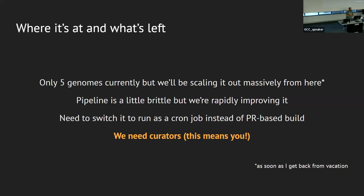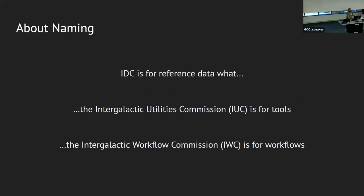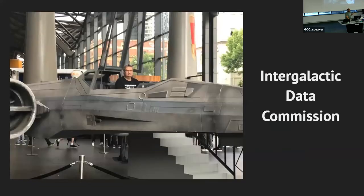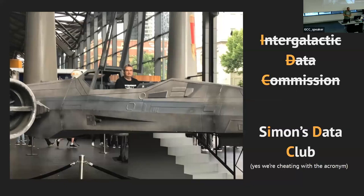What's left? We need some curators for the data. I'm a system administrator — I don't know what should get into the repository. We need scientists to help. And about this funny name, the IDC: the IDC is for reference data what the IUC is for tools and what the IWC is for workflows. This is a project that Simon was fairly passionate about — he wrote the proposal that determined the structure, he wrote the tutorial for the GTN about reference data. So in remembrance of Simon, we're calling it Simon's Data Club. We're cheating on the acronym — that's fine.